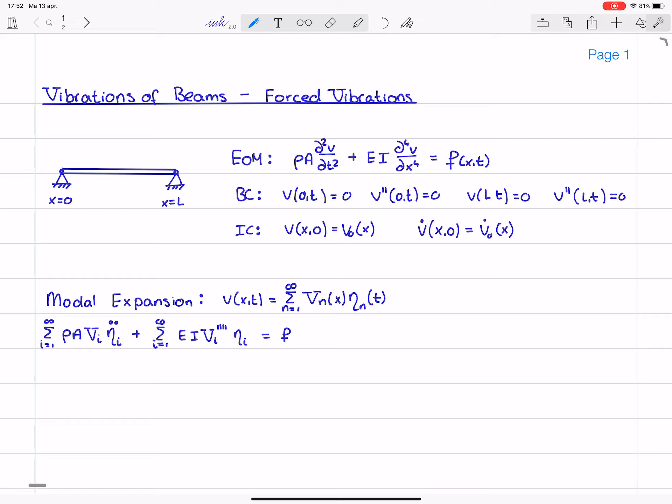Now we multiply the entire equation by v j and we integrate to obtain i is 1 to infinity, rho a, integral v j v i d x, eta i double dot, plus the infinite sum of e i times the integral of v j times v i fourth derivative d x eta i itself. And here we then have the integral of v j times f d x.